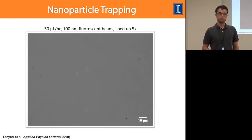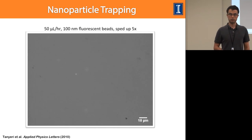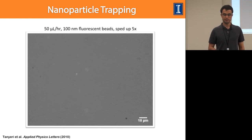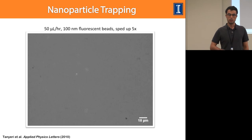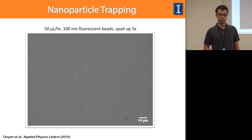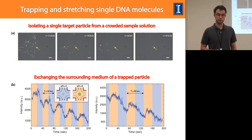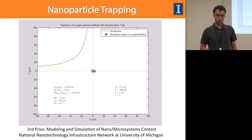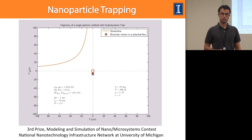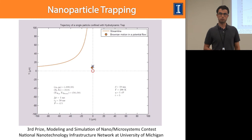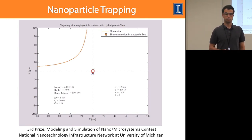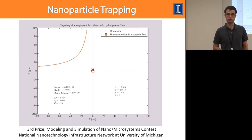We are also pushing the limits of this method for smaller particle trapping. Currently the smallest particle we can confine is a 100 nanometer fluorescent bead, which shows larger Brownian fluctuations. We can trap these particles and exchange the medium to study different phenomena. I also developed a Brownian dynamics simulation to determine the limit of particle trapping. Using the current setup and control mechanism, we would be able to trap particles as small as 10 nanometers, assuming we can track these particles — which is the experimental challenge at this point.